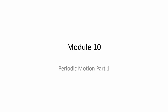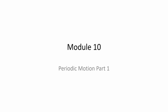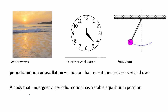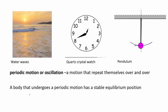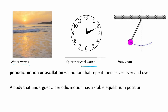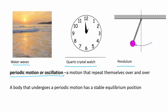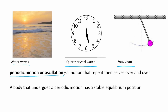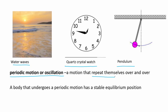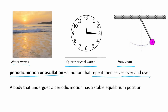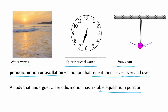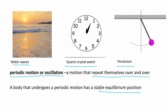Module 10. Here we will tackle periodic motion and its mathematical formulation. In our daily life we experience things like the repeating motion of the ocean at the beach or devices to monitor time. The behavior of these things is what we call periodic motion or oscillation — simply defined as a repetitive motion that acts over and over. A body that undergoes periodic motion has a stable equilibrium position, typically the origin point, where it always returns.